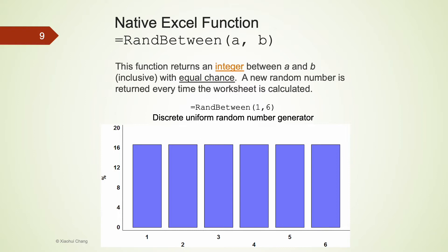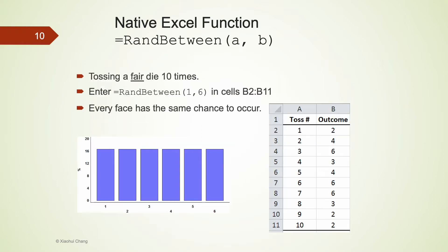For example, if you try to generate a number from 1, 2, 3, 4, 5, 6 with equal likelihood, you can use RANDBETWEEN to simulate a scenario where we toss a fair die 10 times. Column A represents the tosses from 1 to 10. Column B represents their corresponding outcome using RANDBETWEEN. In column B, we enter RANDBETWEEN between 1 and 6 because each face of the die has the same likelihood to occur.